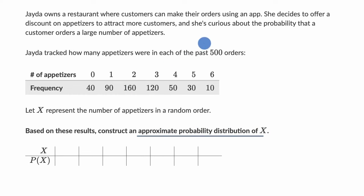So what we can do is look at the last 500, and for each of the outcomes, think about what fraction of the last 500 had that outcome, and that will be our approximation. And so the outcomes here: we could have zero appetizers, one, two, three, four, five, or six.